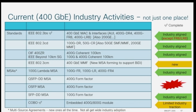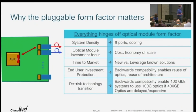I chair this MSA, so I'm very biased — everything I say will be colored. But it all depends on what you're trying to achieve. There are follow-ons like the SFP Double Density, and groups like COBO — a consortium for onboard optics — representing the first attempt of the industry to move away from pluggable optics and move the optics deeper into the board. So why does all this form factor stuff matter? It really matters because everything hinges off that.